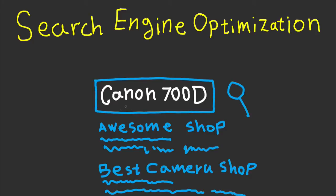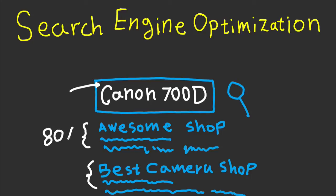If we go through this example I've prepared: let's say someone is looking for Canon 700D, which is my camera. The results that Google returns — I've got some random results here — basically whoever comes up first is the one that's going to collect almost 80% of the clicks. When people put in the keyword, that's the thing they're searching for, and whoever comes up first in the search results gets 80% of the traffic for that keyword.